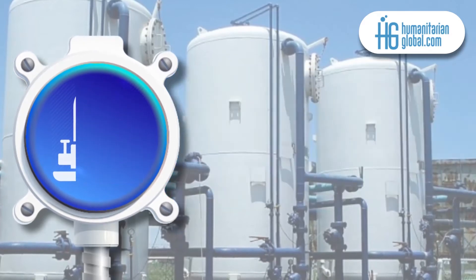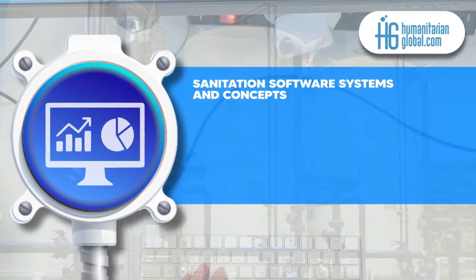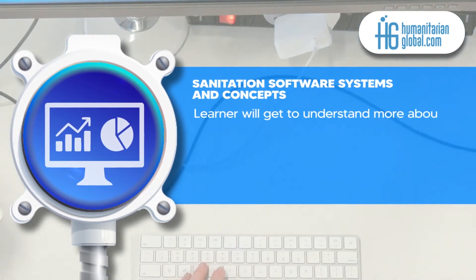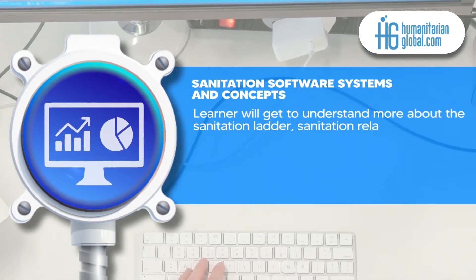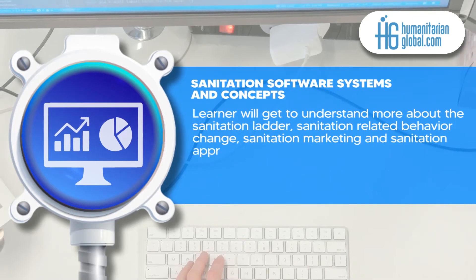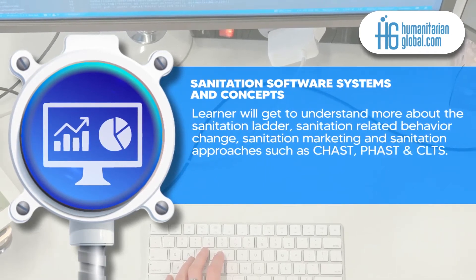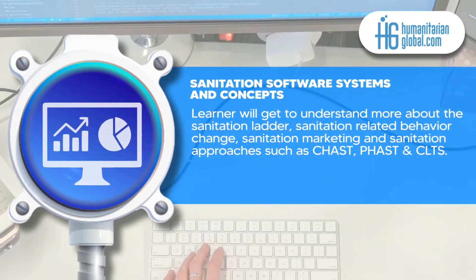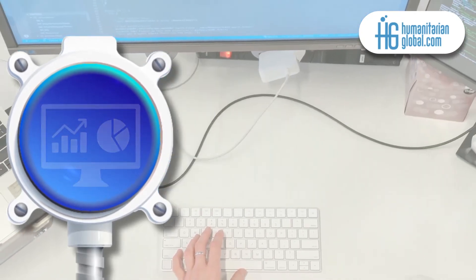In addition, you learn more about sanitation software systems and concepts. In this module, the learner will get to understand more about the sanitation ladder, sanitation related behavior change, sanitation marketing and sanitation approaches such as CHAST, PHAST and CLTS.